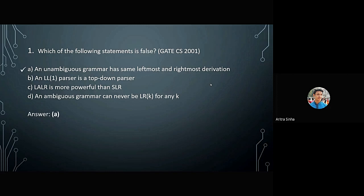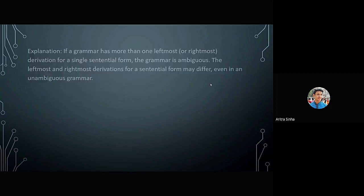The right answer is A: an unambiguous grammar has same leftmost and rightmost derivation. The explanation is if a grammar has more than one leftmost or rightmost derivation for a single sentential form, the grammar is ambiguous. The leftmost and rightmost derivations for a sentential form may differ even in an unambiguous grammar.